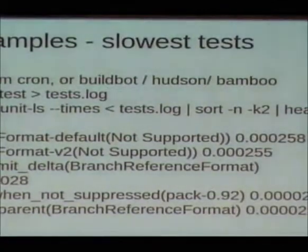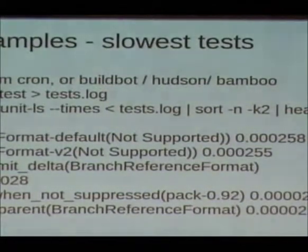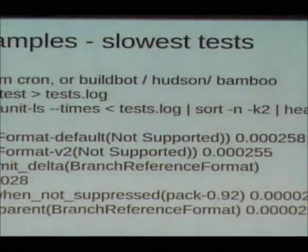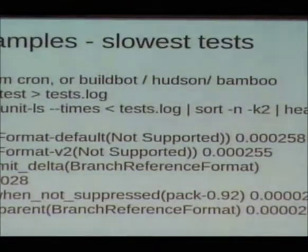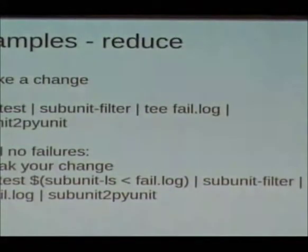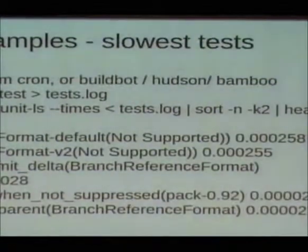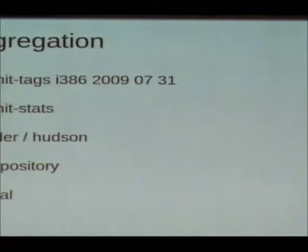The analysis you can do: subunit-ls with --times from a log, piped through sort and head, gets you back your test IDs and how long they took, with the slowest ones at the top. If you've got a slow test suite and you're not sure where it's slow, this is a very simple way of getting that out. And I can do that with any language without having to reinvent this.